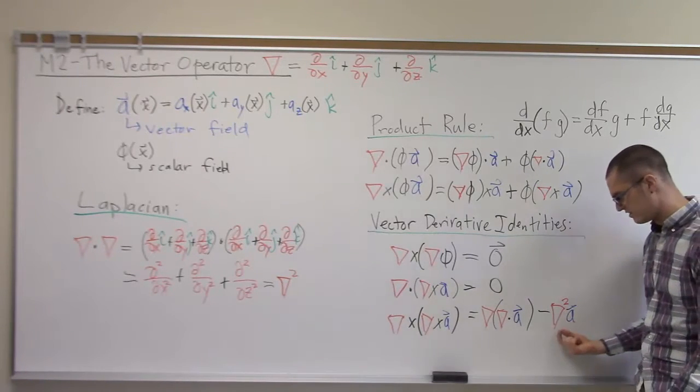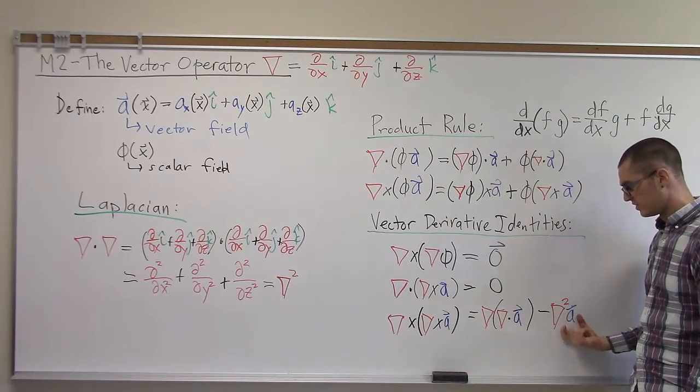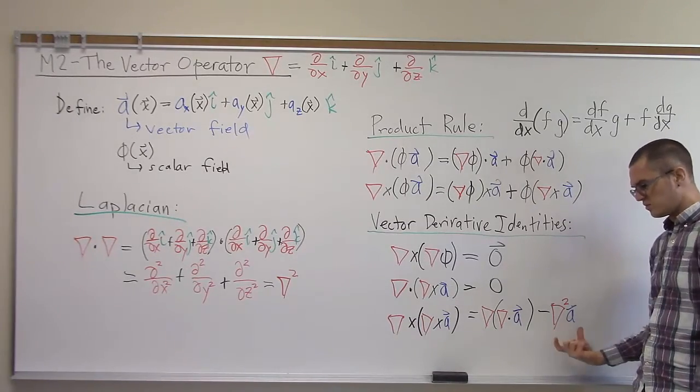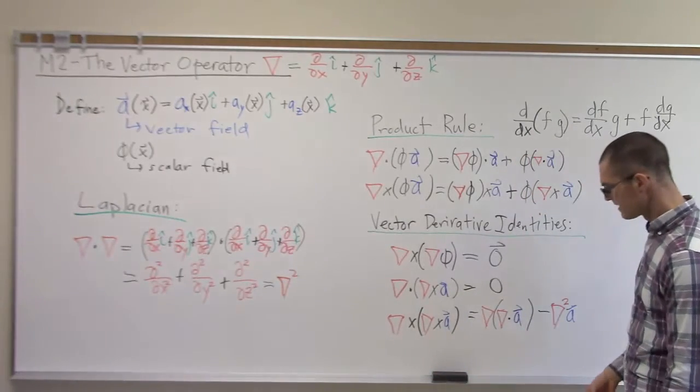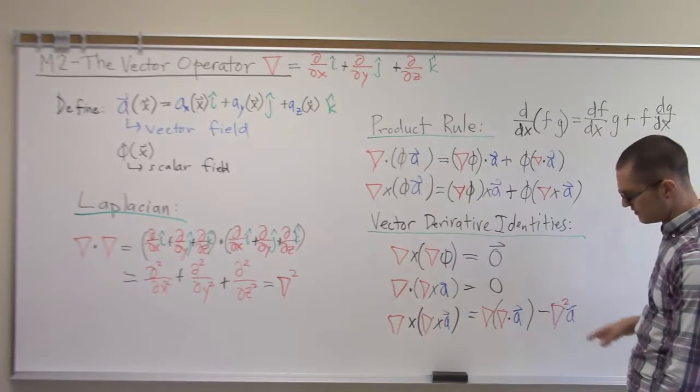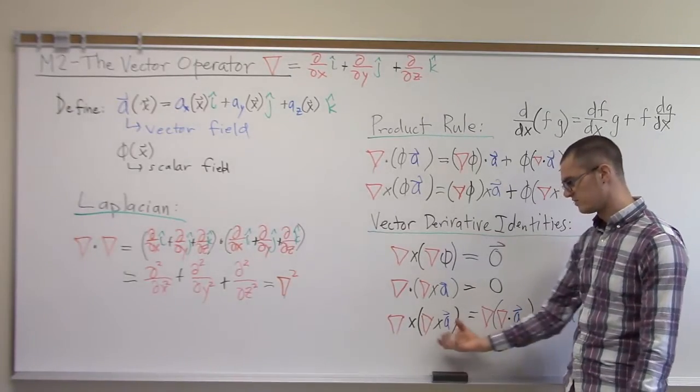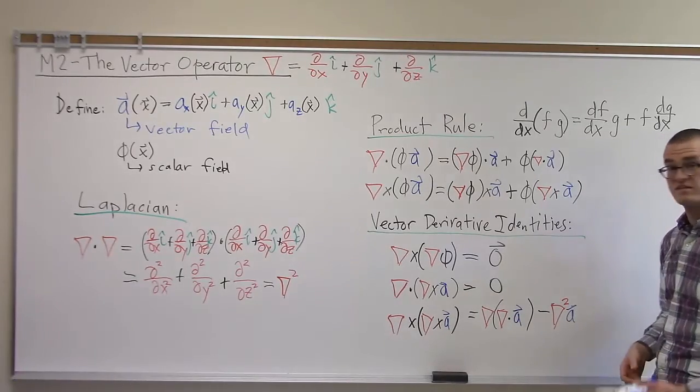It's important to realize that this Laplacian here is multiplied by a vector field. So this actually gives us three equations in essence. The curl of the curl is a vector field, and that's going to give us, in Cartesian system, three coordinates, or three equations. So curl of the curl is the gradient of the divergence minus the Laplacian.